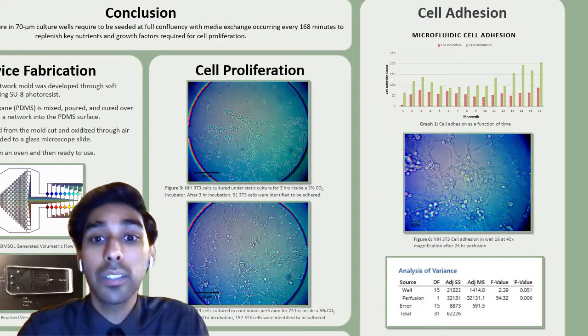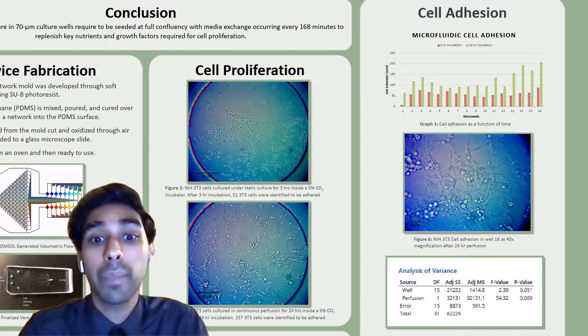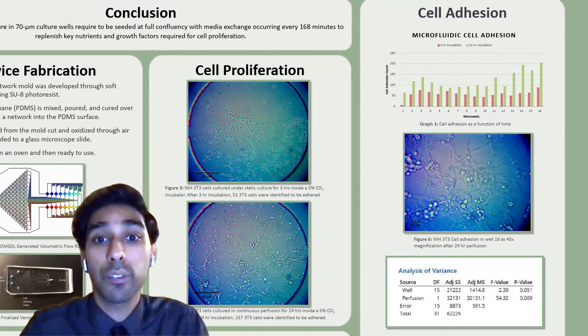Through our testing, we determined that mammalian cells need to be seeded at confluency and have media exchange every 168 minutes for proliferation.